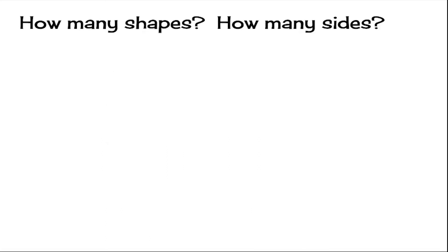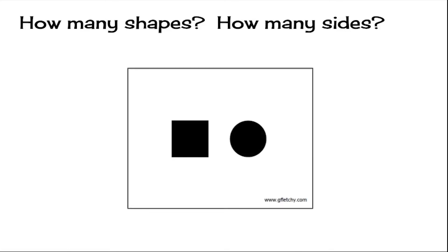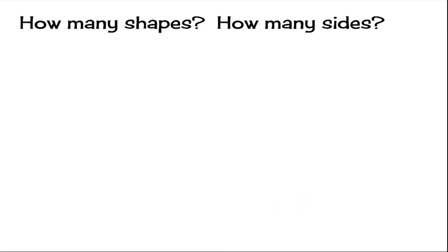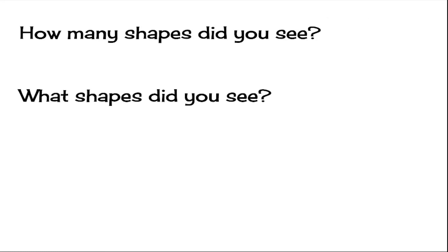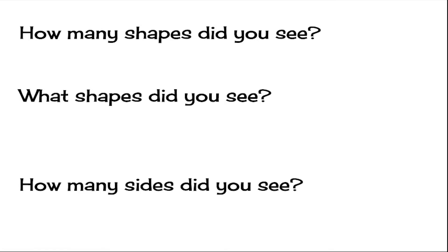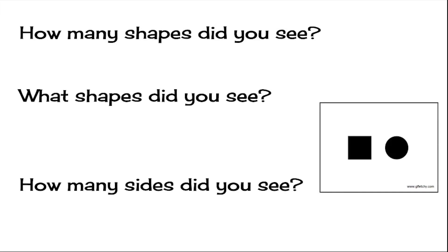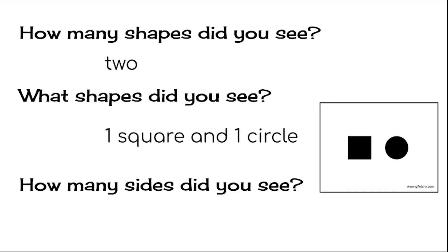Here's another one — get ready. How many shapes did you see? And what shapes? There were two shapes: one square and one circle. So how many sides? Four on the square and zero on the circle — equals four sides total.